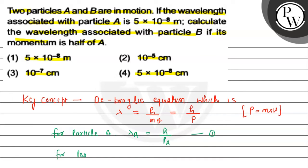For particle B, Lambda B will be h upon momentum of B. We'll call this equation number 2. Now